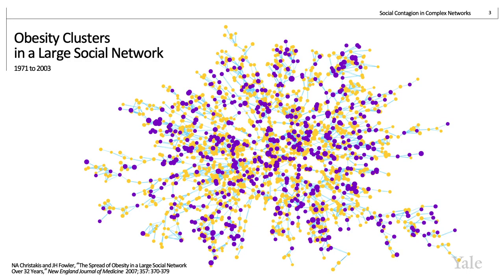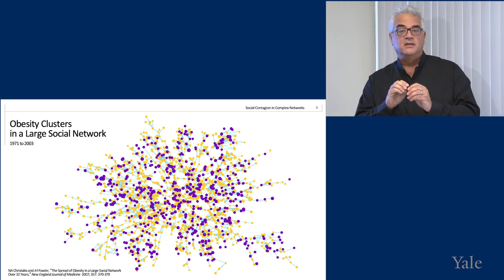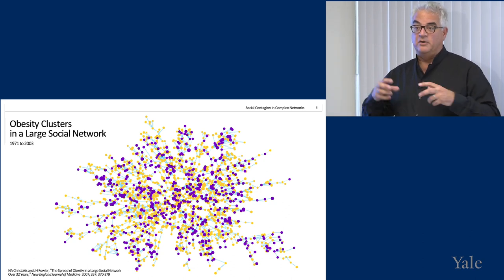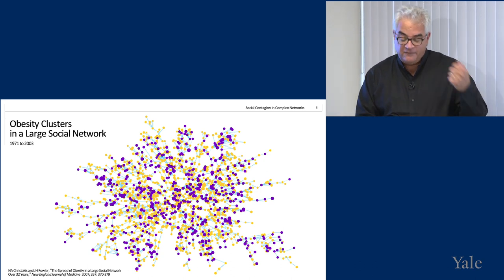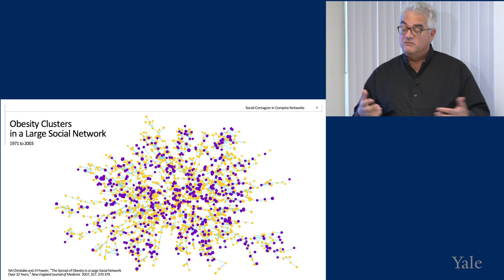My lab assembled a large, prospective, densely interconnected social network of 12,000 people — real face-to-face interactions — repeatedly examined every four years starting in 1971 until 2003. This image shows 2,200 people from the dataset in the year 2000. Every dot is a person, and every line represents a relationship — friend, sibling, co-worker, neighbor, or spouse. We make the dot size proportional to people's body mass index, so bigger dots are bigger people. We also color the dots purple if people are obese — if their BMI is above 30. Looking at this image, it should be apparent that there are clusters of obese and non-obese individuals, though the visual complexity is still very high.